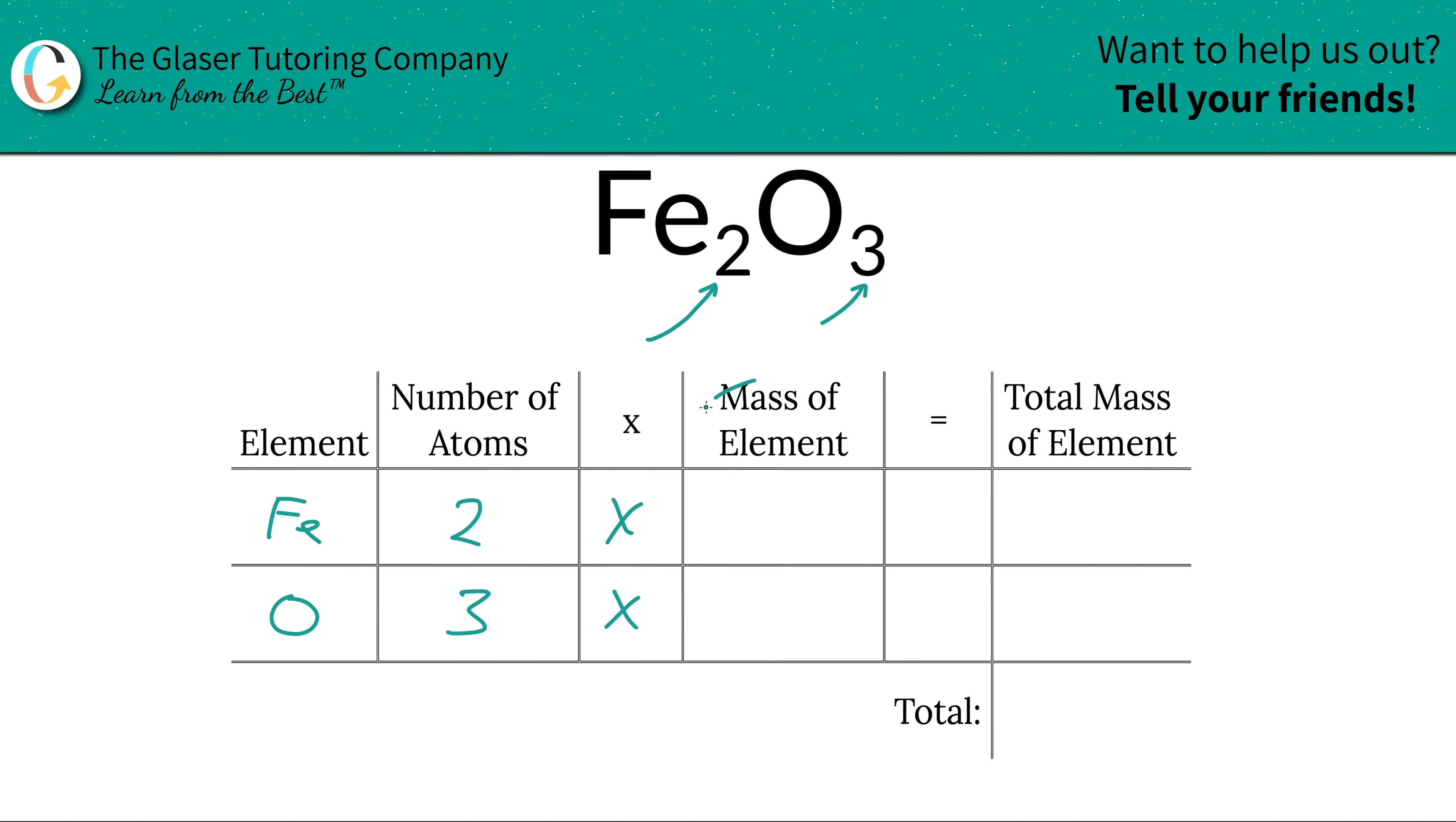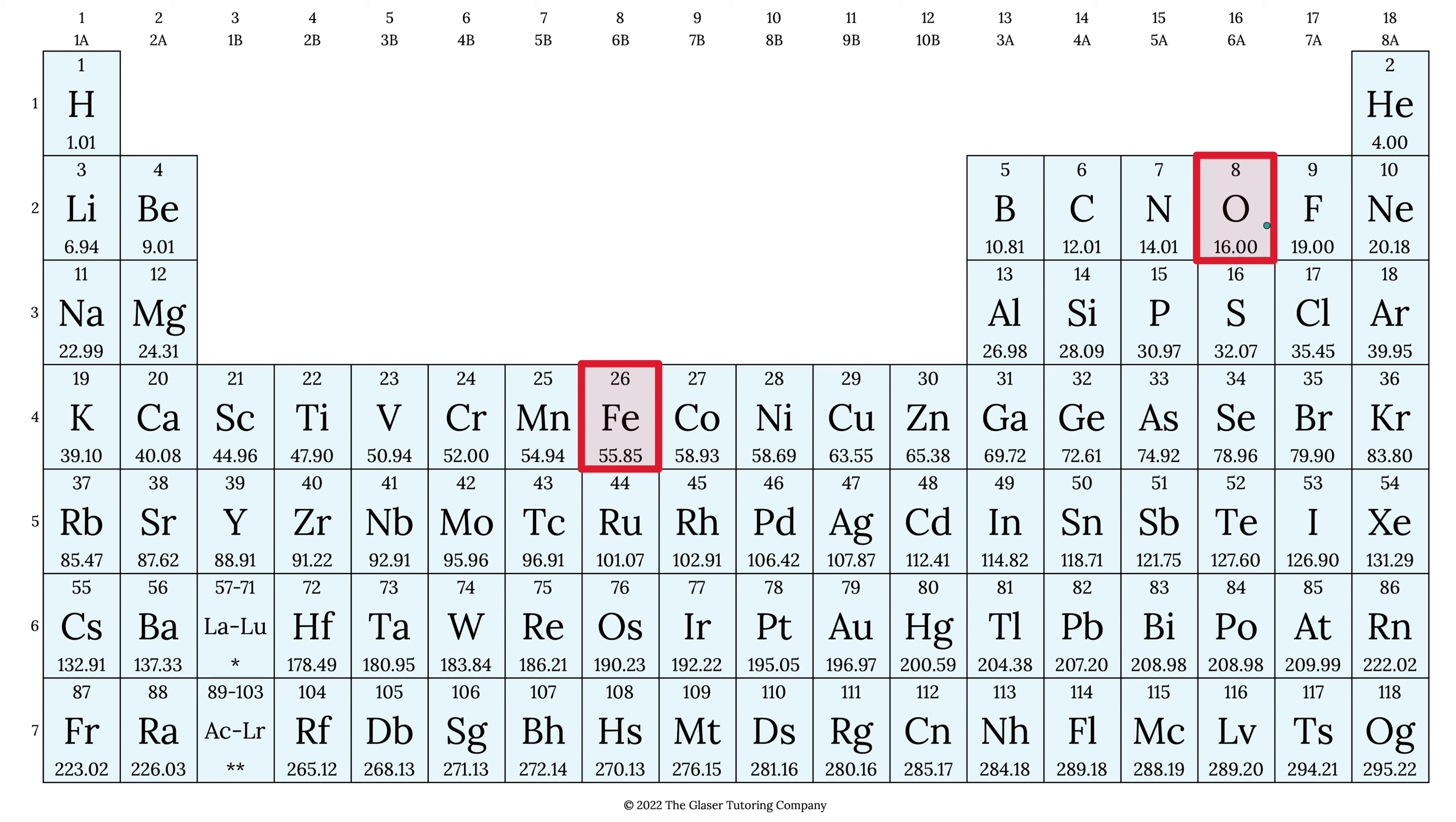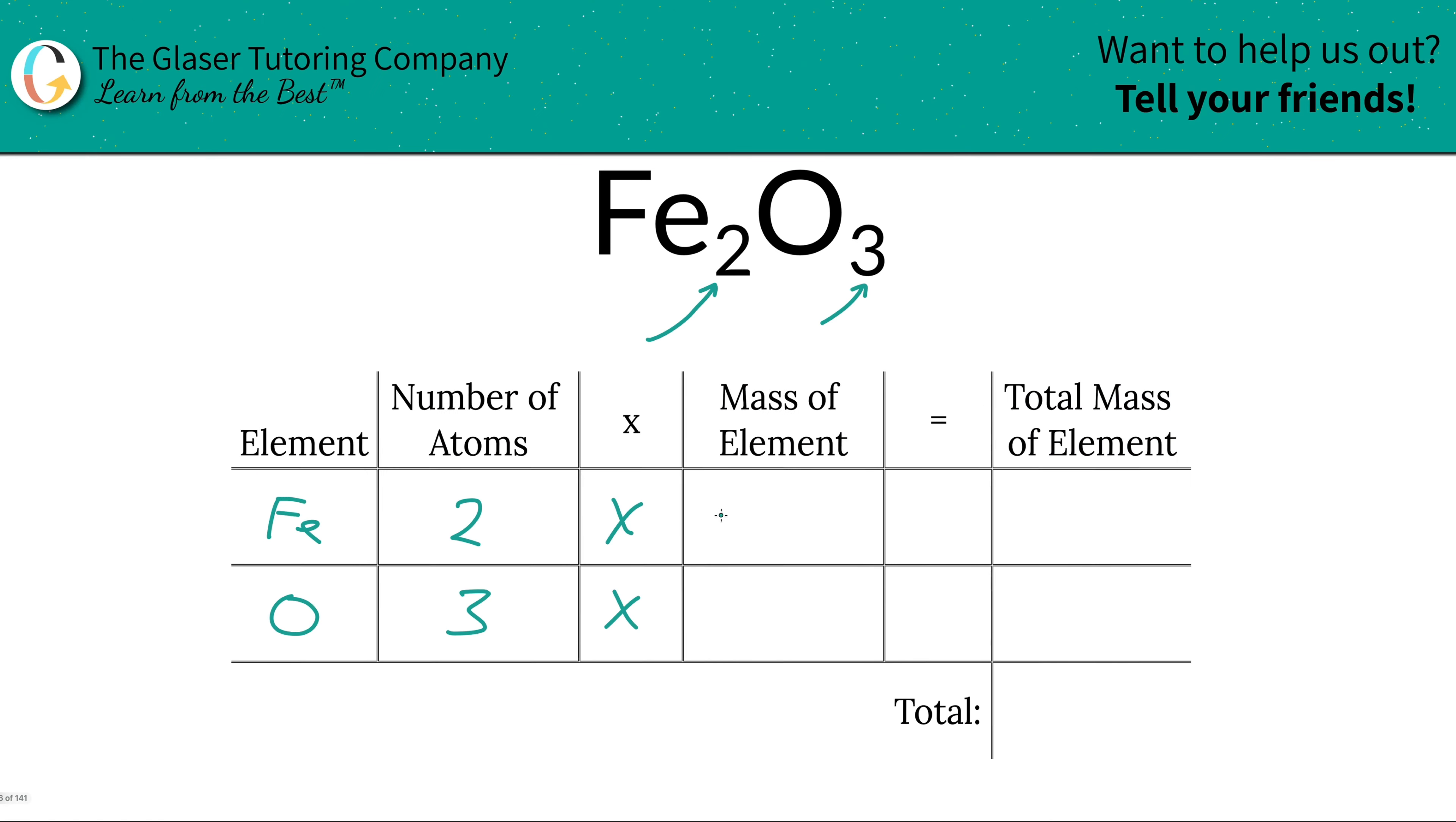Then we're going to multiply those numbers by the mass of each particular element. These masses are found on the periodic table. Hopefully you don't have to memorize them. 55.85 for iron and oxygen is 16. So let's write them in.